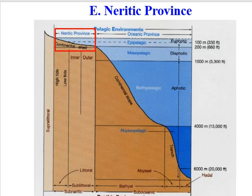Moving away from the continents into the open ocean is the oceanic province — those are the two main provinces. The neritic province refers to water above the continental shelf, and oceanic province to the open ocean. People often use 'pelagic' to mean oceanic, but oceanic is the proper term. Pelagic refers to being up in the water column, off the bottom — so there are pelagic waters in both the neritic and oceanic provinces.